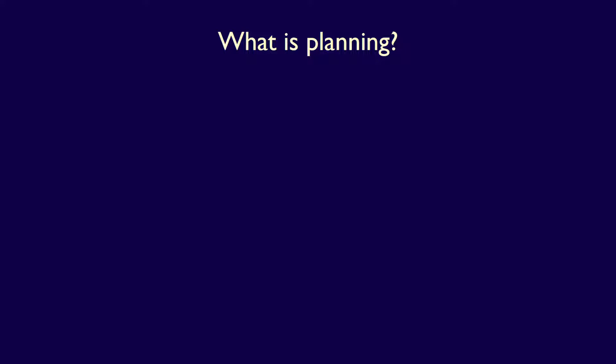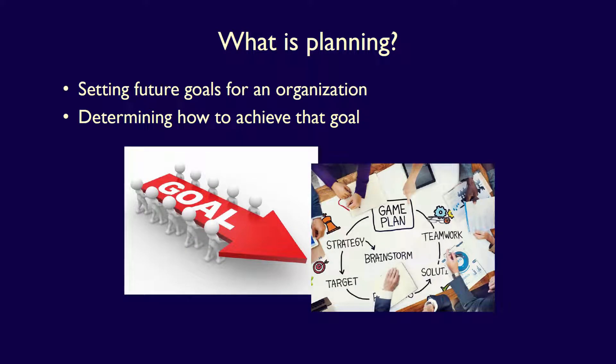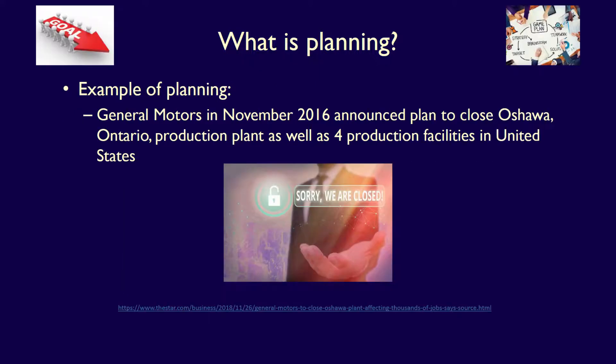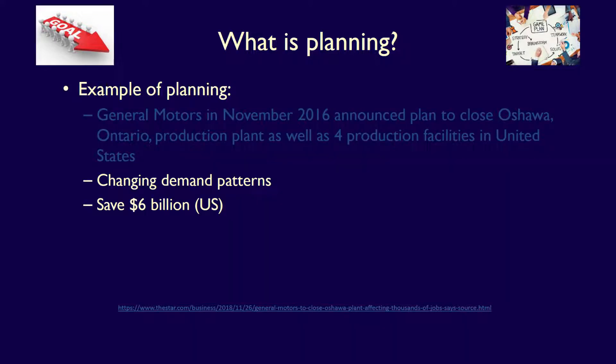Planning is when management sets future goals for an organization, and then figures out how to achieve those goals. For example, when General Motors announced in November 2016 that they planned to close their Oshawa, Ontario production plant, as well as four production facilities in the United States, they did it because they wanted to meet changing demand patterns and to save an estimated $6 billion US by the year 2020. The closures were a way of achieving their plan.